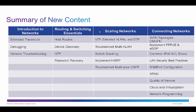For the Scaling Networks course, we have VTP, extended VLANs, and DTP. We're also adding additional troubleshooting for multi-VLANs, information around switch stacking, and HSRP — which is already covered in the current curriculum — but now we're looking at implementing and potentially troubleshooting it. We also have multi-area OSPF in the course and are adding troubleshooting for that as well.